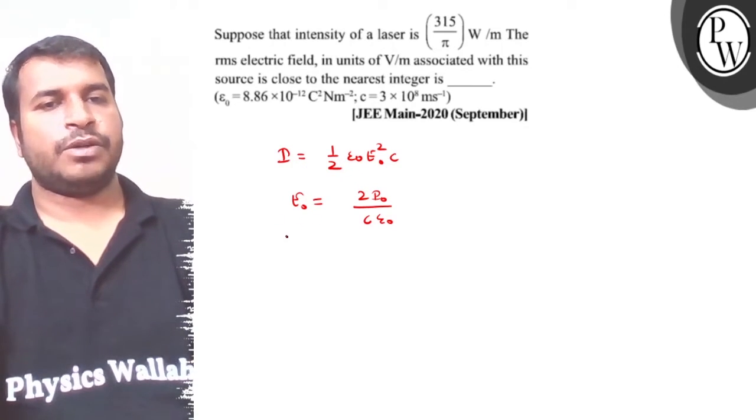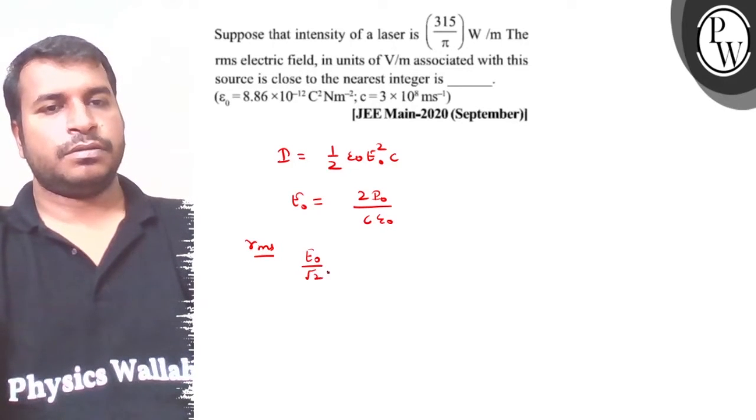Now, I need E naught, I need RMS value. So RMS means E naught by root 2.